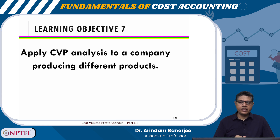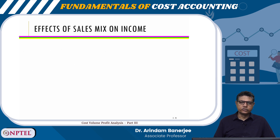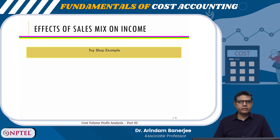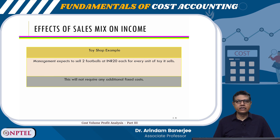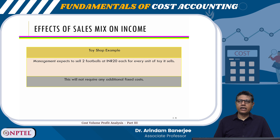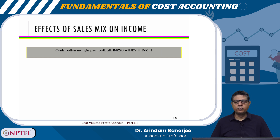Learning objective 7: apply CVP analysis to a company producing different products. When a company is producing different products, we look at the effects of sales mix on income. Management expects to sell two footballs at ₹20 each for each unit of toy it sells, with no additional fixed cost. Contribution margin per football is ₹20 minus ₹9 variable cost, which equals ₹11.